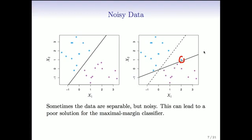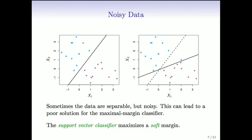So we want to be able to deal with both of these problems. What we call a support vector classifier is going to do that, and it maximizes what we call a soft margin.